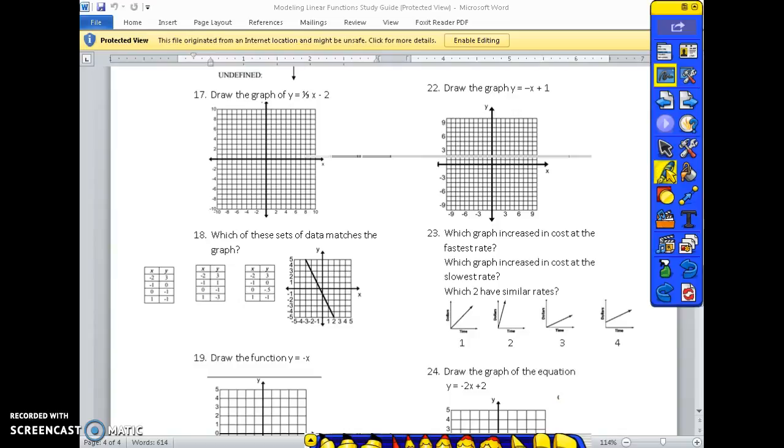Number 17, draw a graph of y equals one-third x minus 2. Start with your negative 2 on the y-axis. Your slope is 1 over 3. Go up 1 to the right 3 and then draw your line.